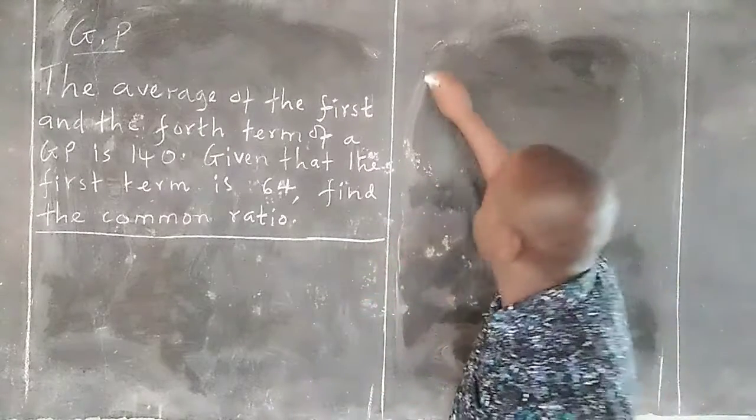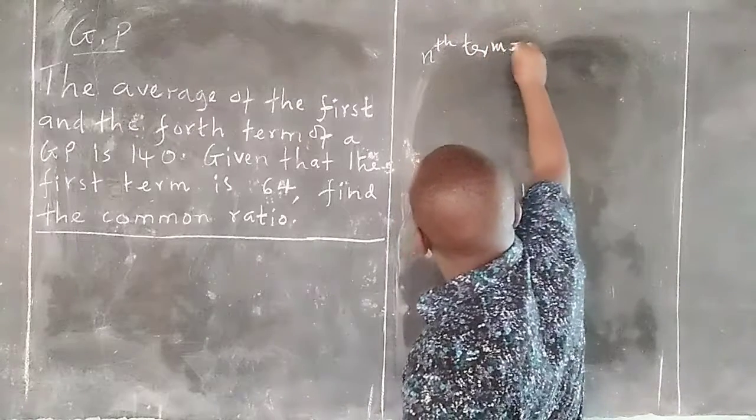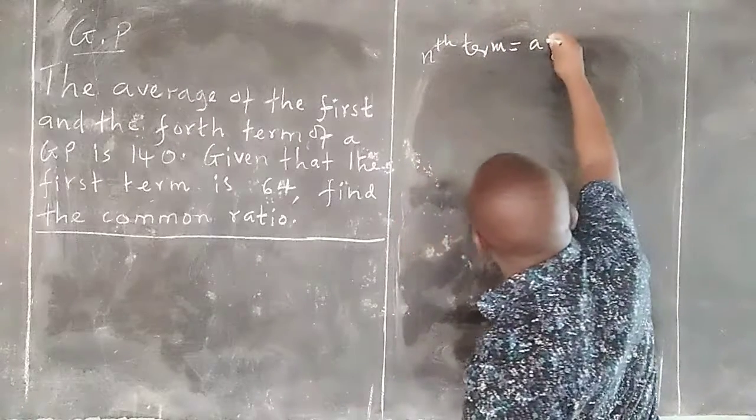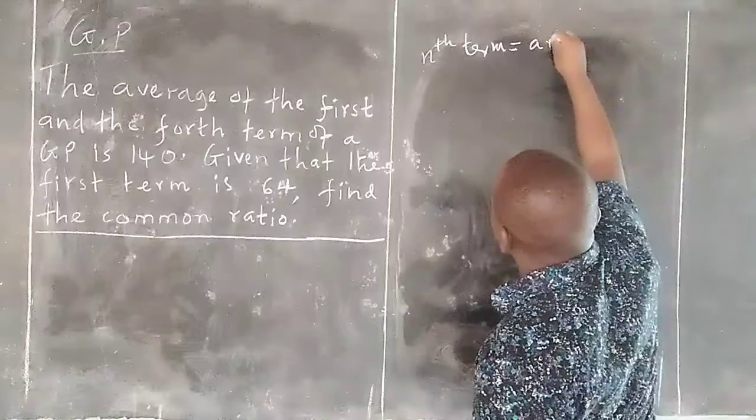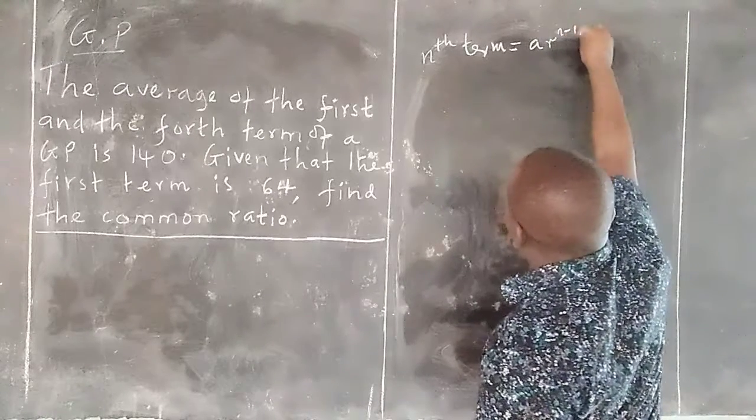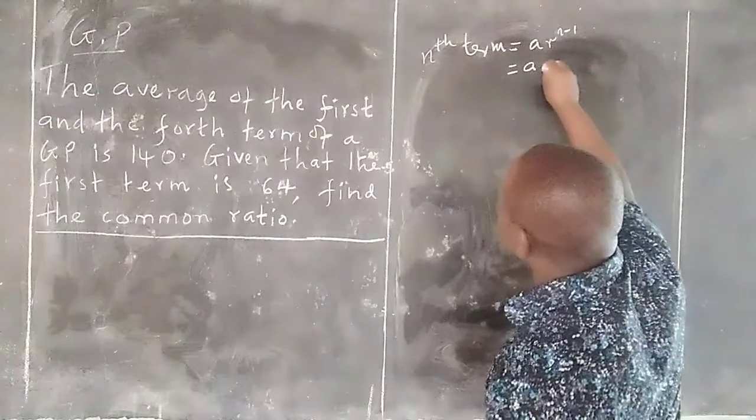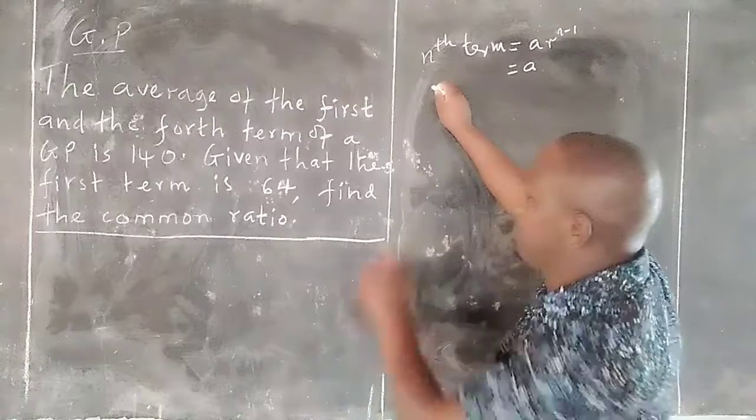We know that any other term is given by a, where a is the first term, times r, then raised to n minus 1, such that if we are getting the first term we just write a.